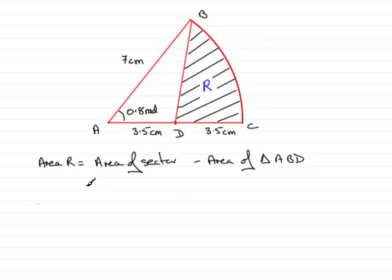Now we know the area of the sector. We worked that out in part B. It came to exactly 19.6 cm². Now I need to subtract the area of the triangle ABD.